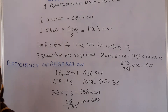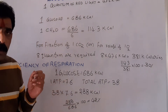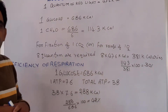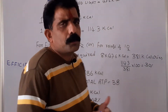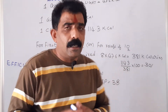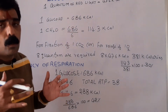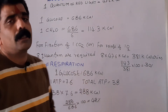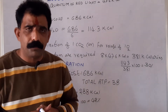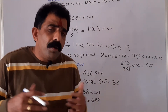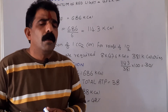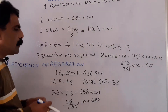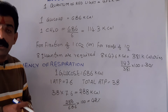Coming to the efficiency of respiration — each glucose molecule consists of 686 kcal of energy. When glucose is oxidized in respiration, all the carbon skeleton is disintegrated; the 6 carbons in glucose are released as carbon dioxide. The bonds between carbon atoms are broken and the released energy is captured into ATPs, NADH₂, or FADH₂. The total number of ATPs produced in aerobic respiration is 38.